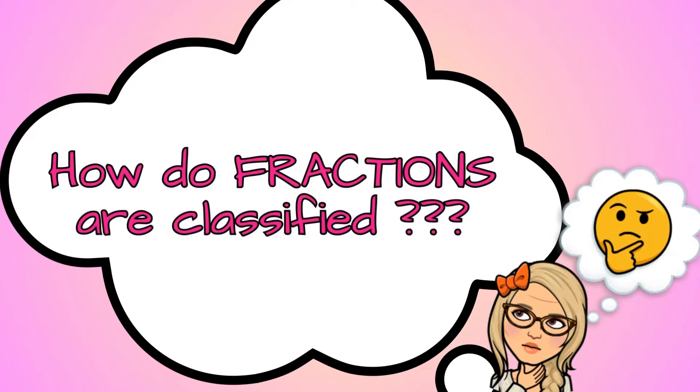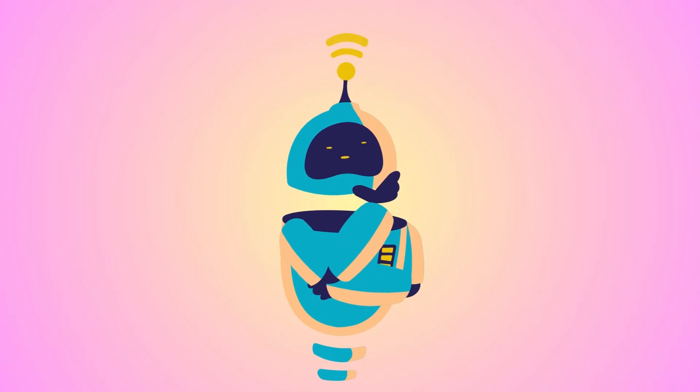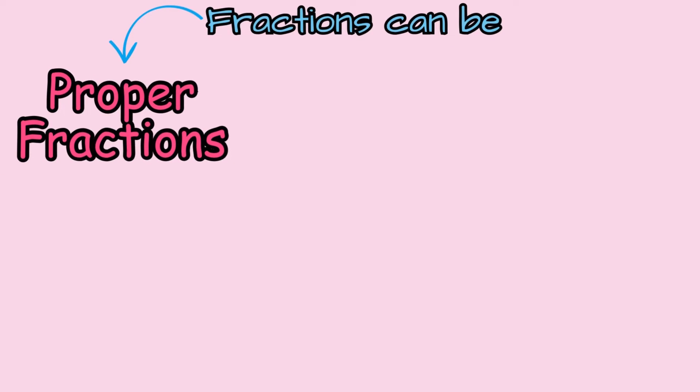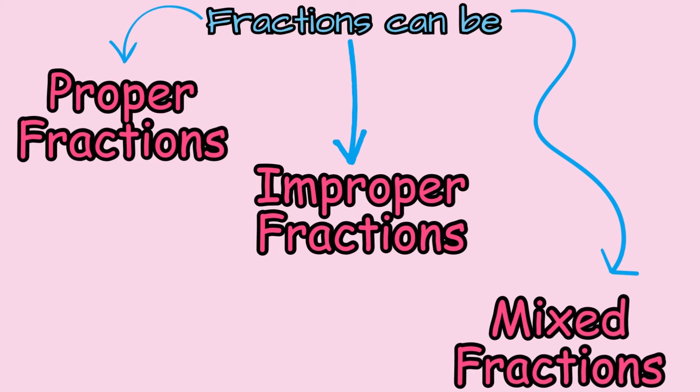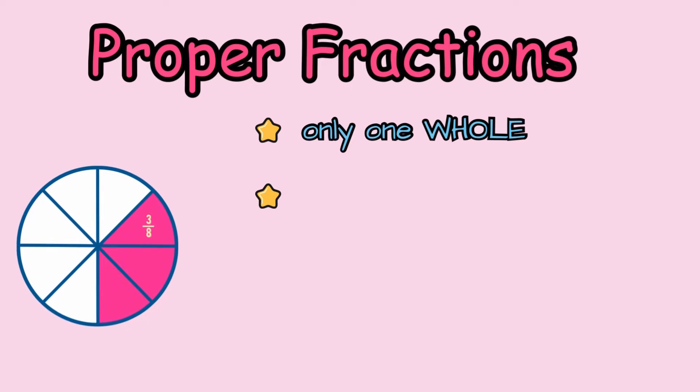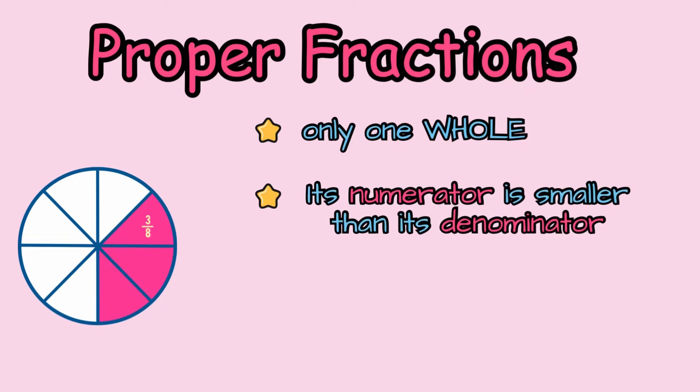How do fractions are classified? Fractions can be proper fractions, improper fractions, and mixed fractions. Let's begin with proper fractions. Proper fractions are represented by only one whole. Its numerator is smaller than its denominator, like in this case, 3 eighths.